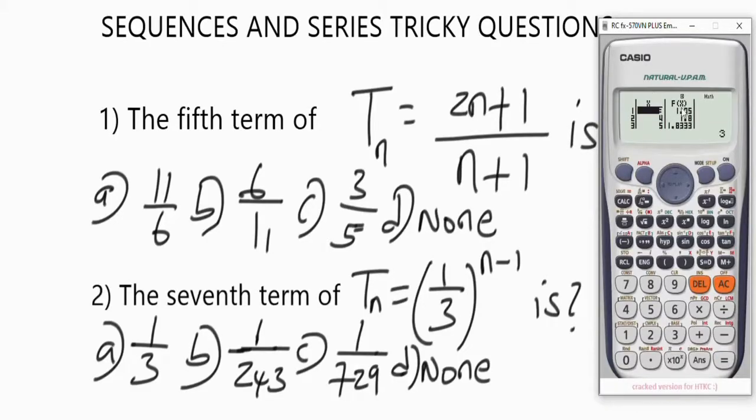So you see it started from three. The third term is 1.75, the fourth term is 1.8, and the fifth term is 1.83. So right now we have gotten our answer: 1.83. If we convert the options in fraction to decimal, we see the one that'll give you 1.83 and that will be your answer. So let's verify. 11 over 6 is the same thing as 1.83. So the answer to this question is option A.